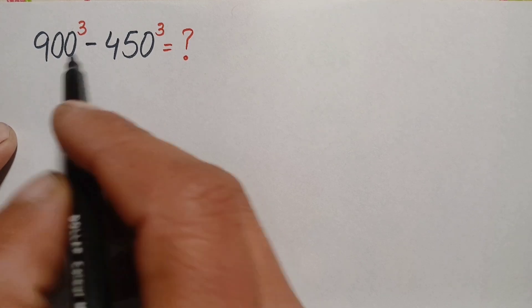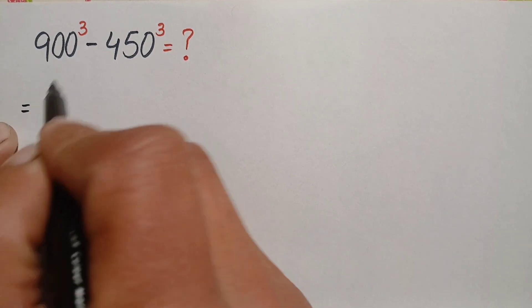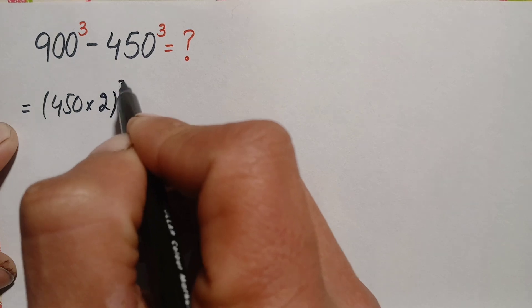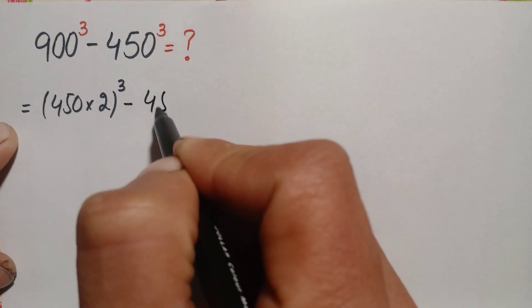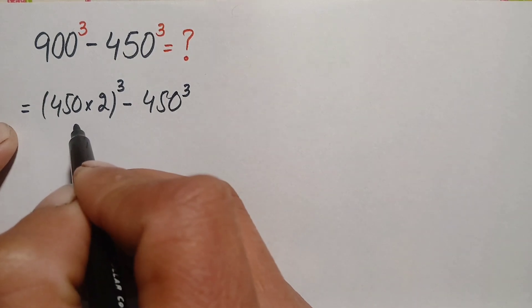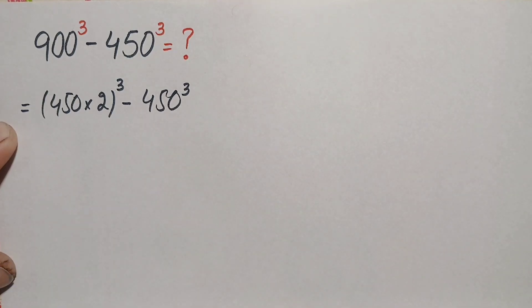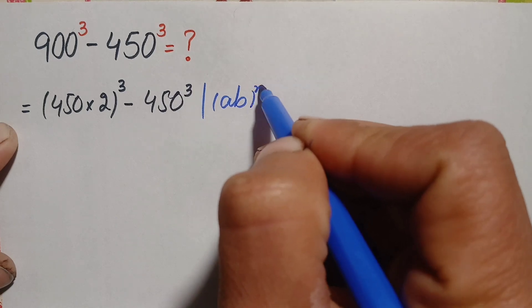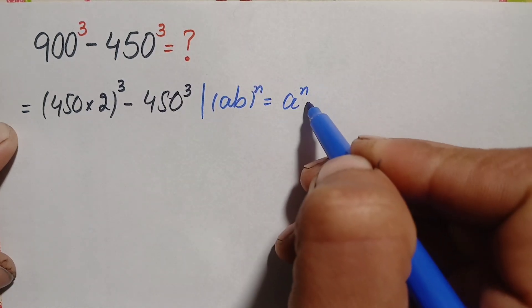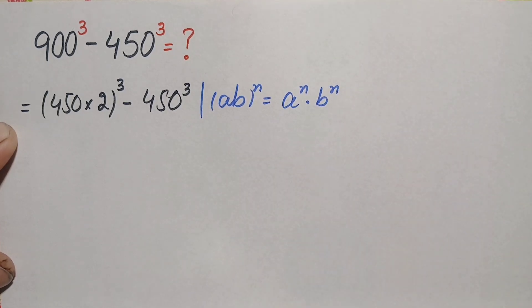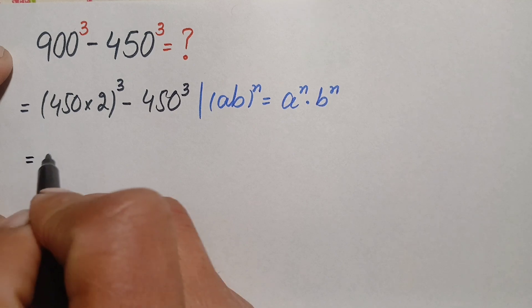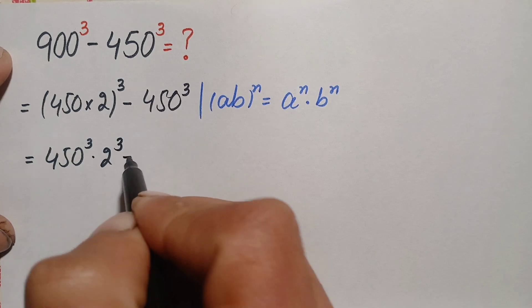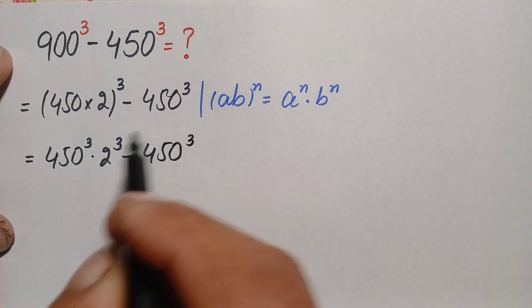First of all we will factorize this number. We can write 900 as 450 times 2, so this equation becomes (900)³ minus (450)³, which is (450×2)³ minus (450)³. Here we will use the exponential identity (a×b)^n = a^n × b^n.